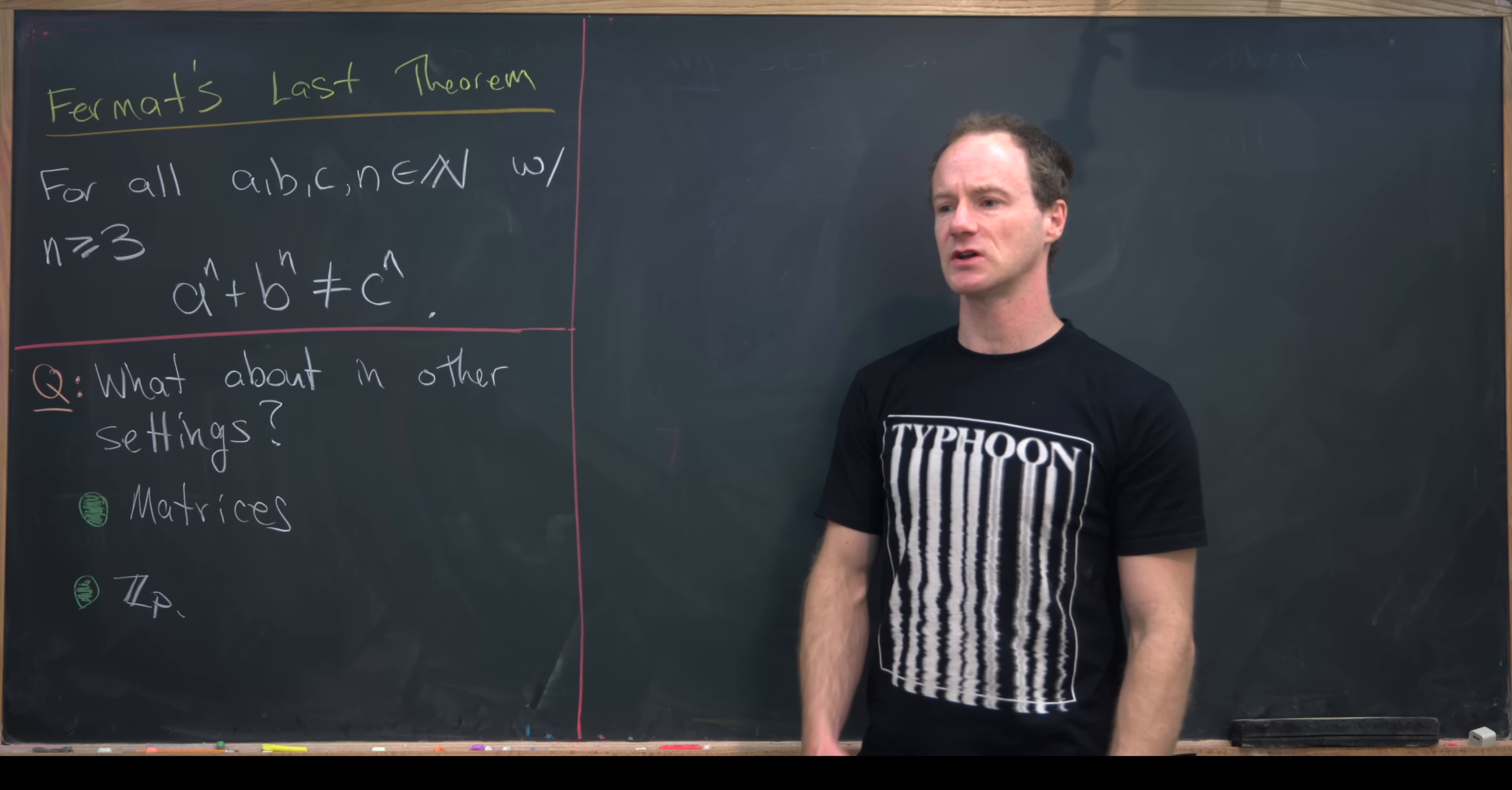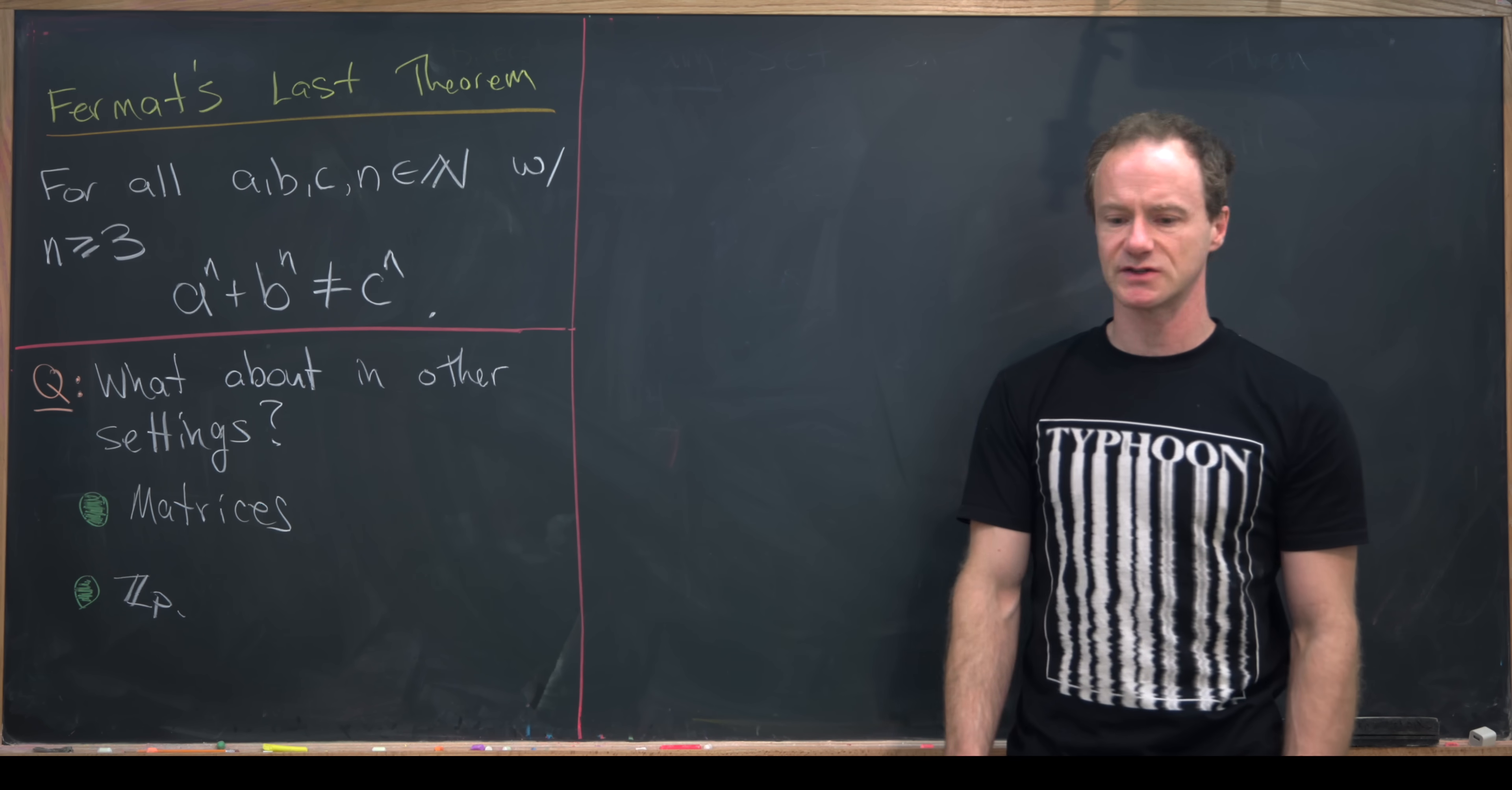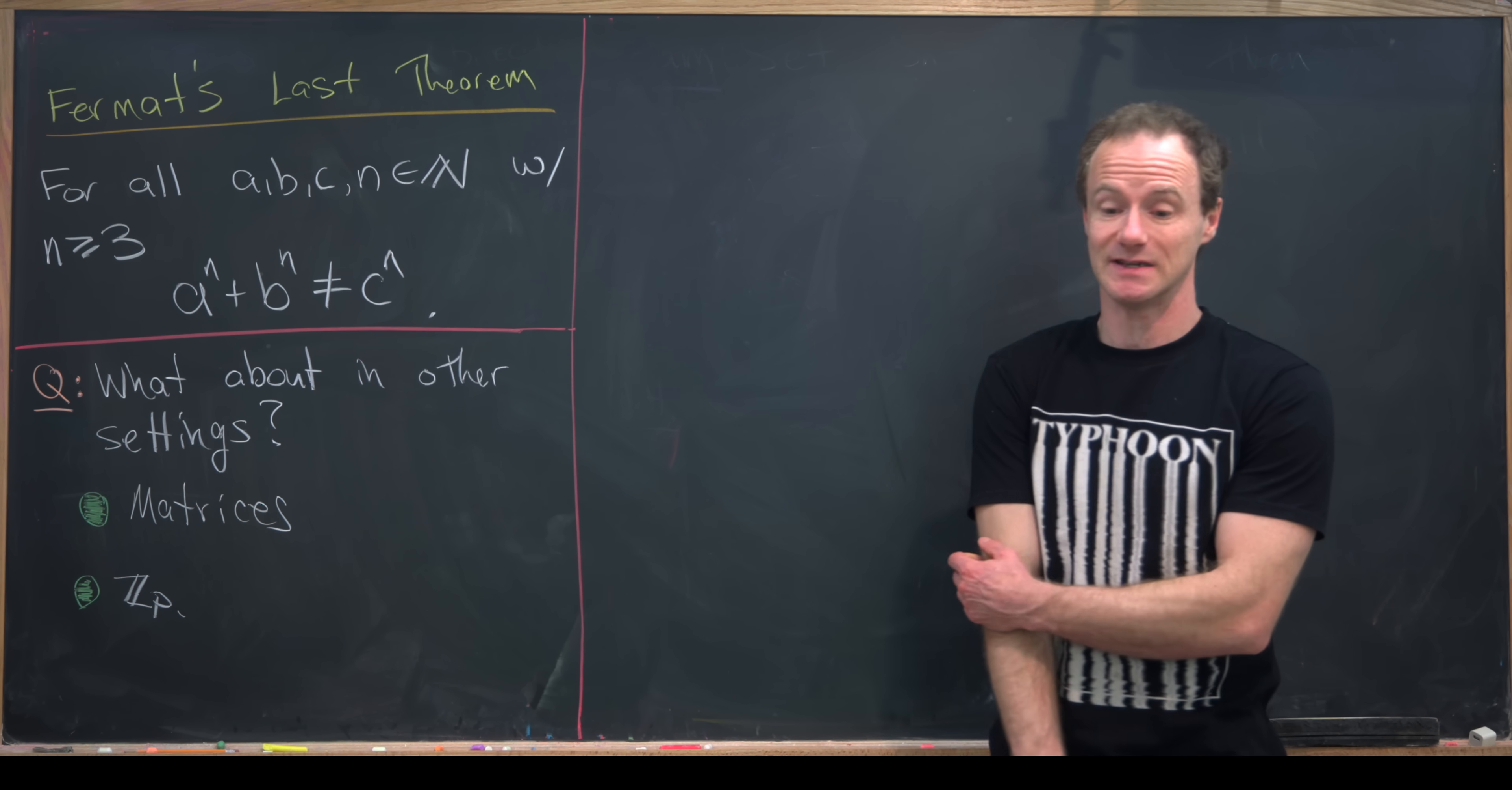So now the question we want to look at in this video is, what about in other settings? In other words, is something like Fermat's Last Theorem true in other arithmetic settings, like maybe among matrices or maybe in z mod p? So, in fact, it is not, and we'll look at two examples, one from the ring of matrices and one from the ring zp.